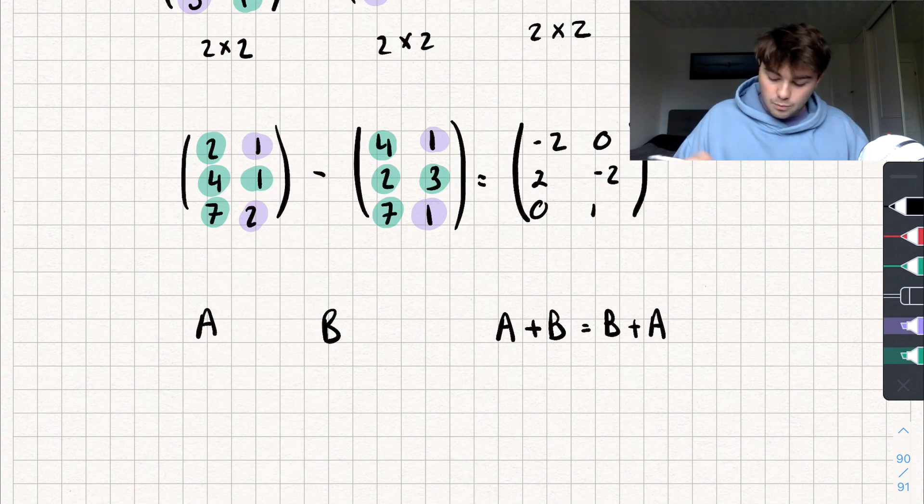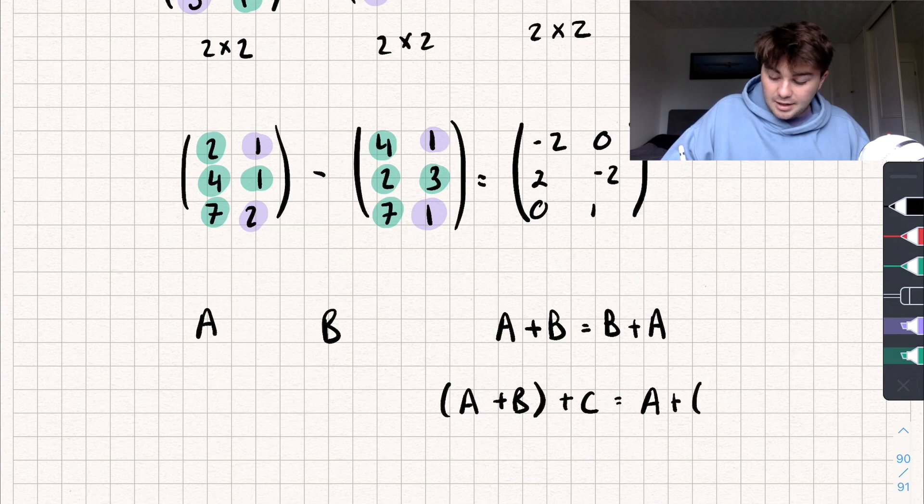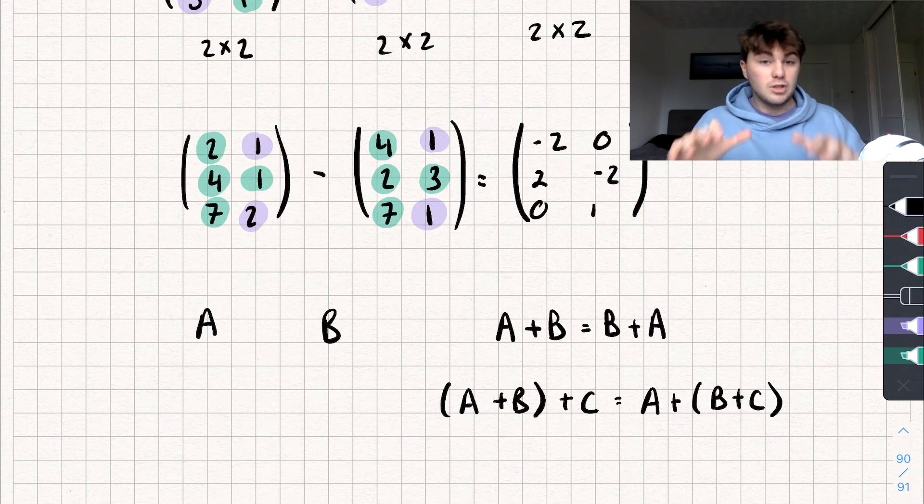And it's also associative, which means say I did matrix A plus matrix B, and then to whatever I get, I add in another matrix, so we'll call it C. That is the same as if I took matrix A and I added it to matrix B plus C, like that. And matrix subtraction, well I'll leave it to you to see if you can work out if it's associative and commutative.